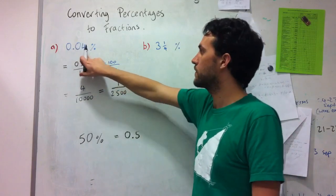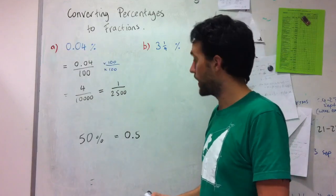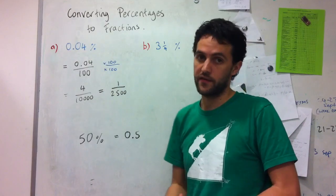So zero point oh four percent, or four hundredths of a percent, is one over two thousand five hundred.